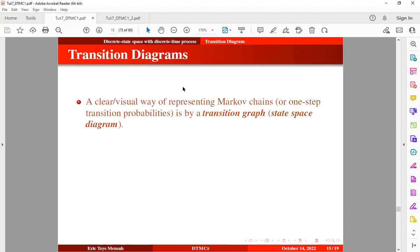So a transition diagram, also known as a transition graph or a state-space diagram, is a visual or a clear way of representing Markov chains or one-step transition probabilities.